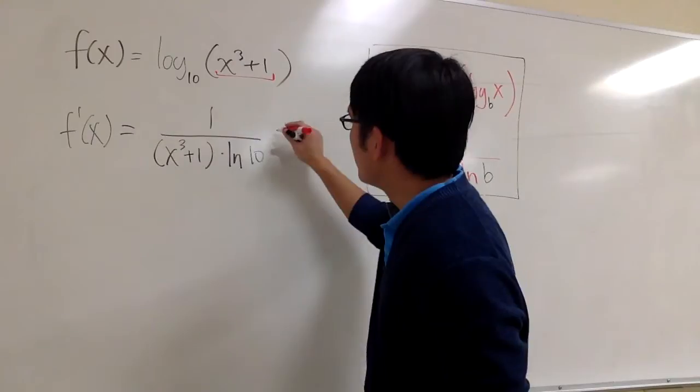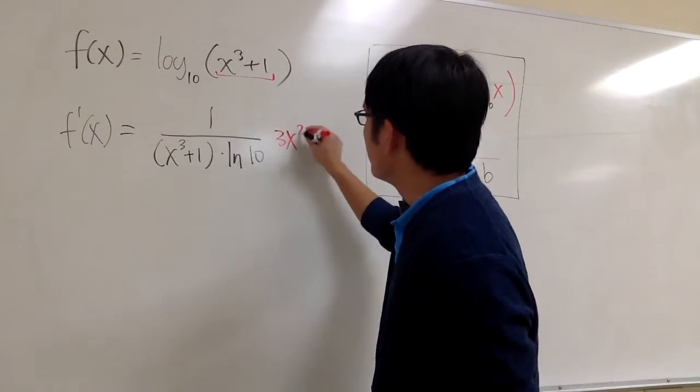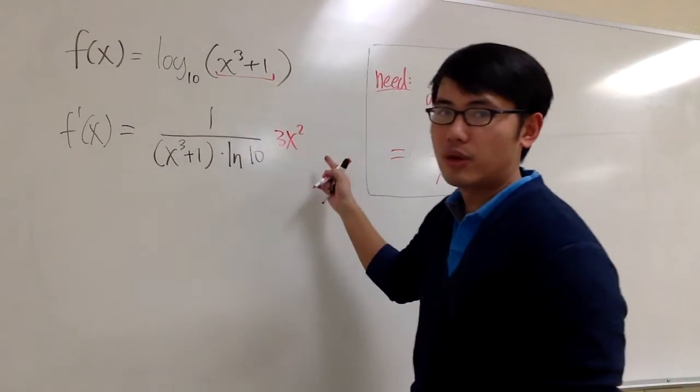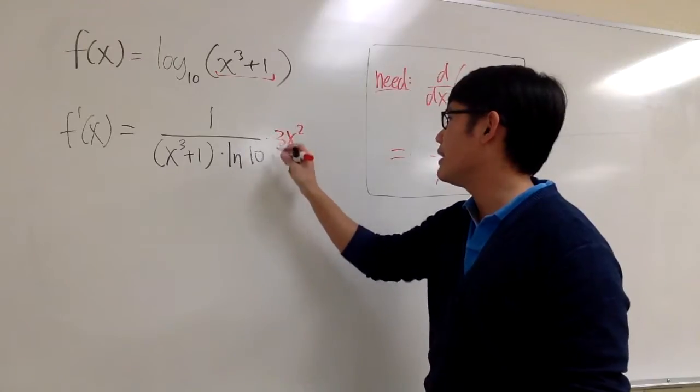The derivative of x to the third power, we get 3x squared, and the derivative of 1 is 0. So I need to multiply by 3x squared.